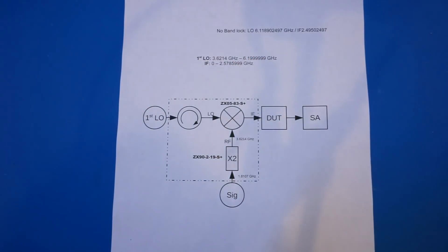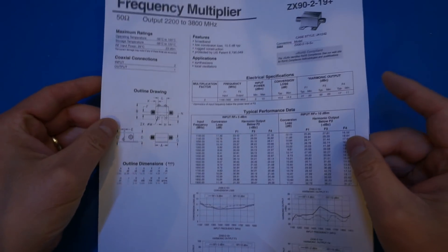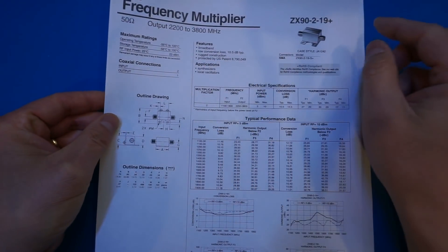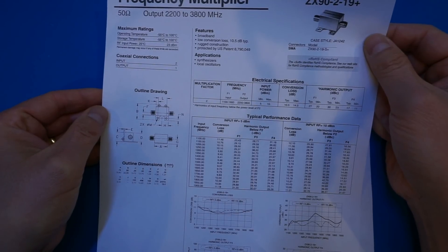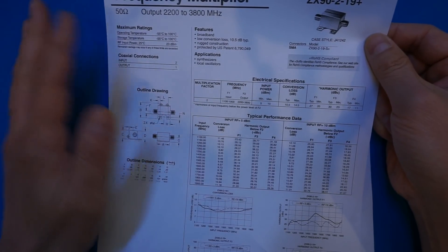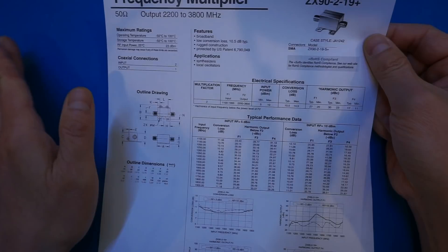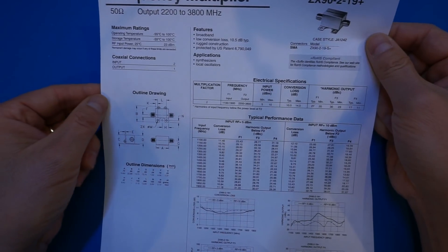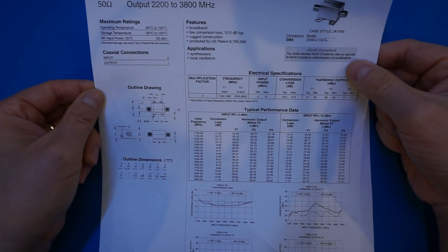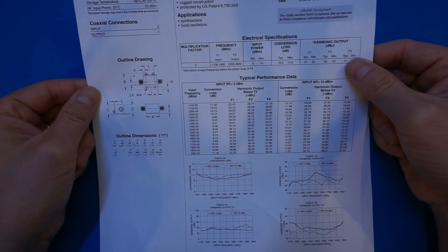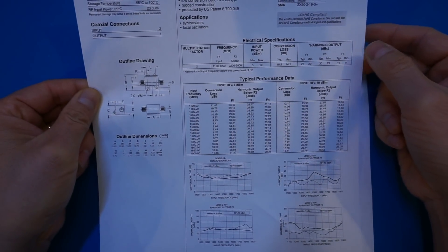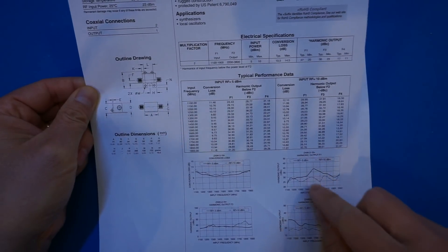Now, of course, this is not ideal as a frequency doubler has conversion loss. In this case, it's up to 10.5 dB. But also, the conversion loss is a function of the frequency, which in turn causes unevenness in the frequency response. And it also introduces unnecessary harmonic distortions as well, as you can see in the various graphs here.